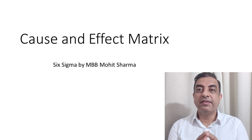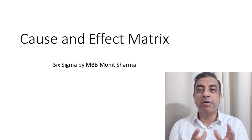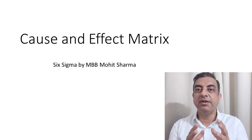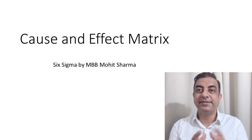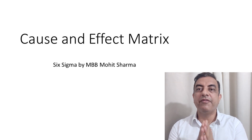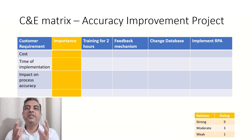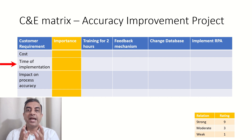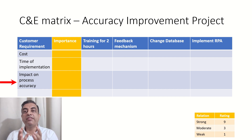In cause and effect metrics, customer requirements are ranked by the order of importance to the customer. The solutions and the customer requirements are ranked by their interaction impact. Let's understand all of this with the help of an example. This is the cause and effect metrics of an accuracy improvement project. The customer requirements in this case are the cost, time to implement, and impact on process accuracy.